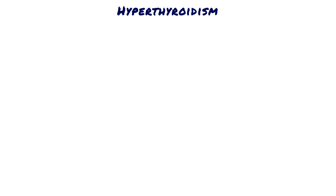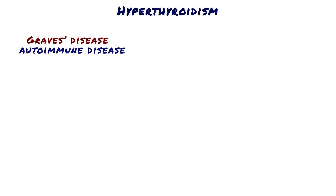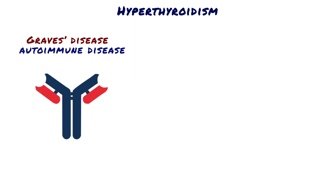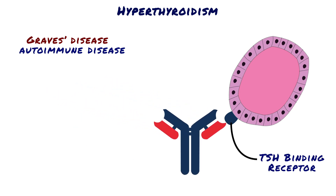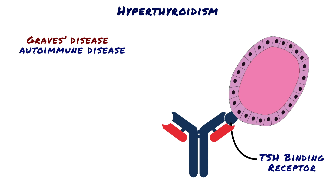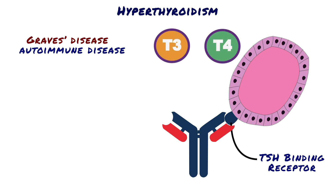Hyperthyroidism can happen a few different ways. Graves' disease, the most common form of hyperthyroidism, is an autoimmune disease in which antibodies called thyroid-stimulating immunoglobulins form against the TSH receptor in the thyroid gland. These antibodies bind with the same membrane receptors that bind TSH and stimulate the thyroid gland to release thyroid hormone, with resultant development of hyperthyroidism.